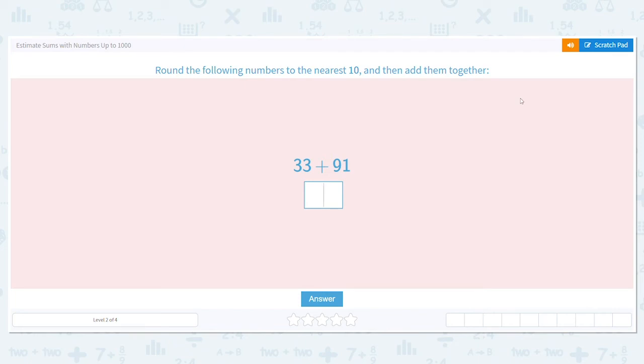Alright, let's practice estimating sums with numbers up to one thousand. Our first question says to round the following numbers to the nearest ten and then add them together. This is very important that we follow these directions. You always want to make sure that you round first and then add. That is the correct process. You don't add and then round.